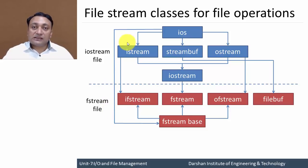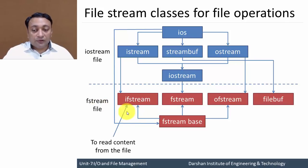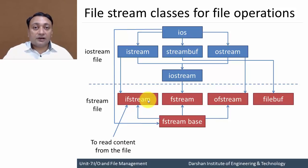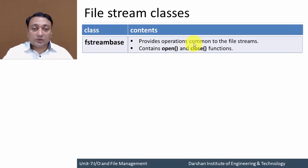If you are getting input from keyboard or any other device and generating output to your monitor or printer, you include iostream. But if you are dealing with files, then you are supposed to include fstream. Here ifstream will be used to read content from a file, that content will be given to the program to process, and the output will be returned to the file using ofstream. Let us discuss these in detail.